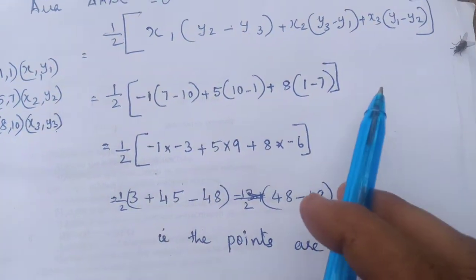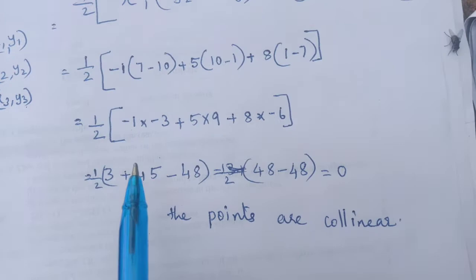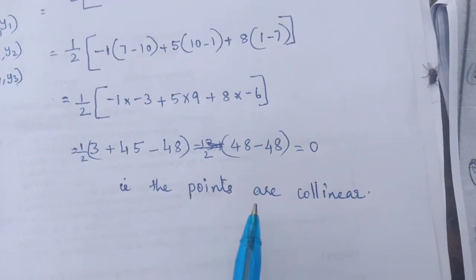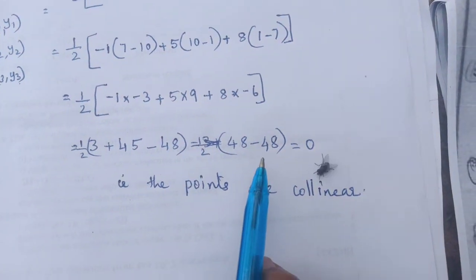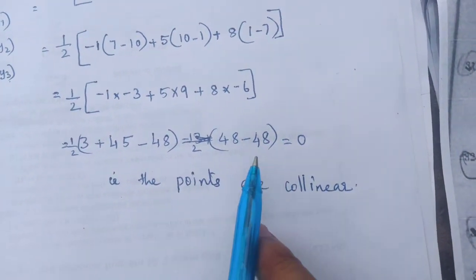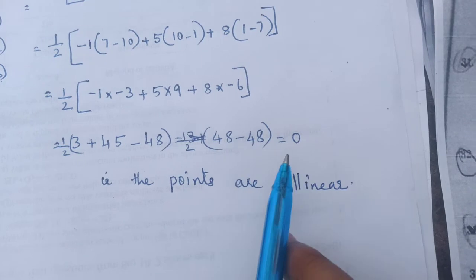Then this half will get 0. Half will get cancelled. Then half into like this we will get 48 minus 48, that is 0. 0 into 1 half, then 0.